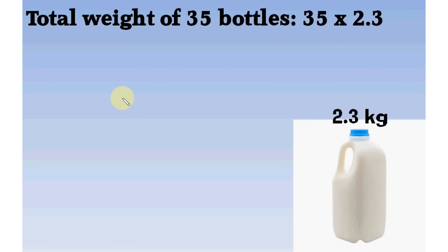35 multiplied by 2.3. First, forget the decimal point. Do simple multiplication: 35 multiplied by 23.